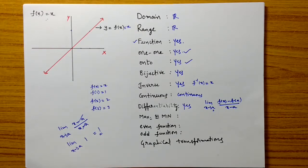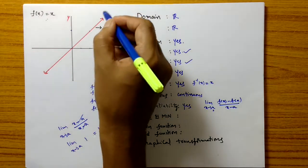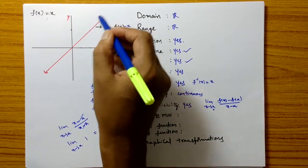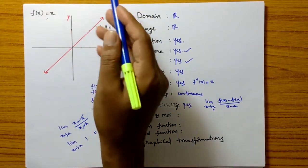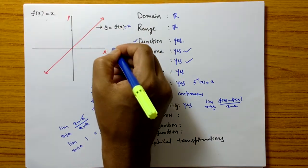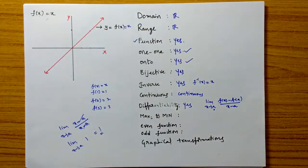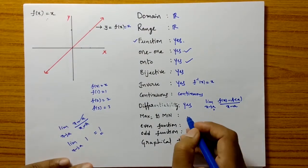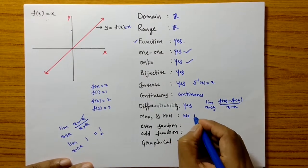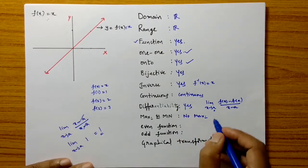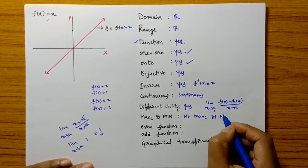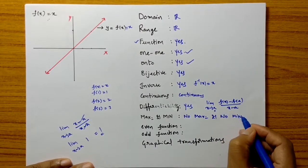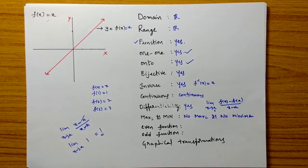What about the maximum and minimum values of this function? From the graph it can be understood easily. As bigger a value of x you take, that much bigger a y value you get. So this function has no maximum value and no minimum value.